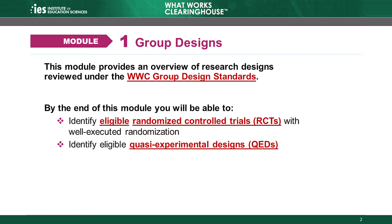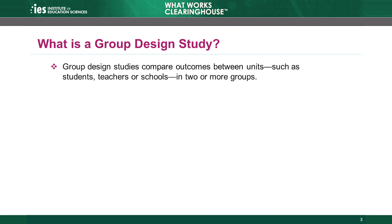To understand the WWC group design standards, we'll need to talk about what counts as an eligible randomized controlled trial, as in a well-executed randomization, and as an eligible quasi-experimental design study. Group design studies measure the effectiveness of an intervention by comparing outcomes for study units, which might be students, teachers, or schools, between two or more groups.